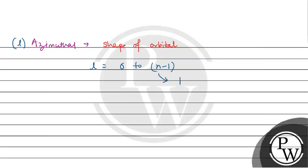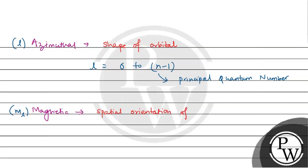Where n is equal to the principal quantum number. The second is the magnetic quantum number, represented by ml. The magnetic quantum number gives the spatial orientation of the orbital with respect to a standard set of coordinate axes.